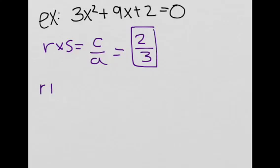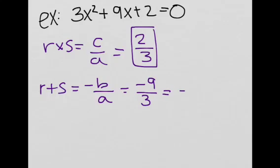Now let's find r plus s. We know that r plus s from Vieta's formulas is negative b over a, and this is equal to negative b, which is negative nine, over a, which is three. So this is equal to negative three. The sum of the solutions is negative three.